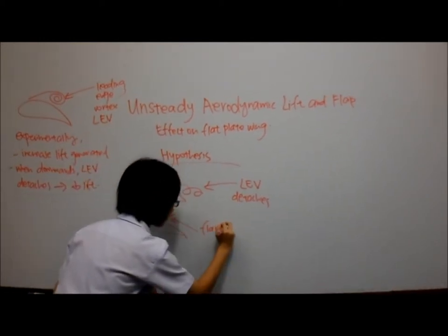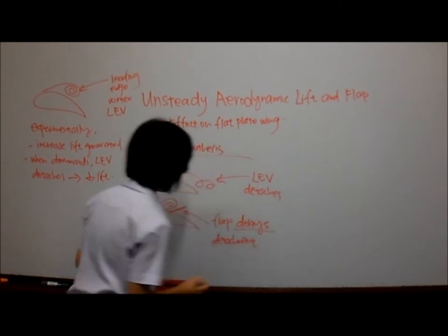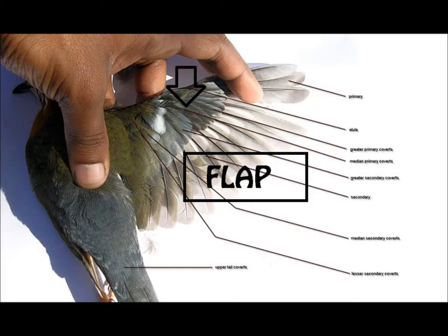The idea of the flap is derived from observing how birds fly. Birds have wings whose feathers prop up during flight, acting as flaps which may help delay the detachment of the vortices.